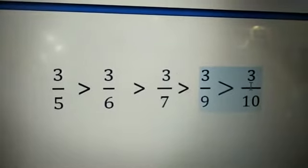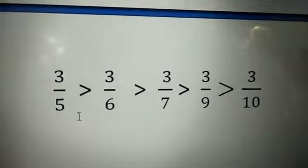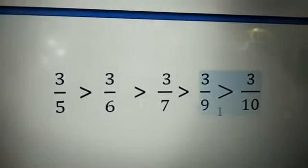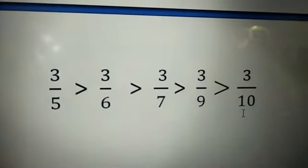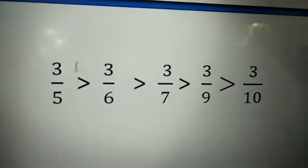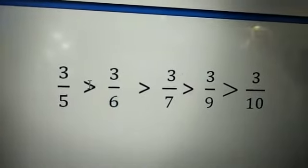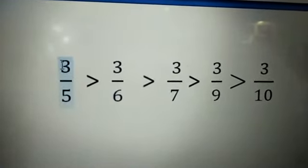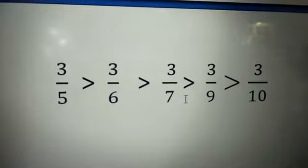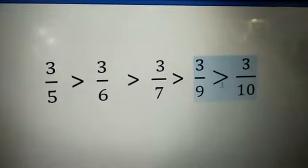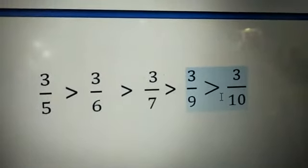In descending order for this type of problem, you have to arrange small to big in the denominator — like 5, 6, 7, 9, 10 — but the symbol here is different: strictly greater than. You should change the symbol. So our answer is: 3/5 > 3/6 > 3/7 > 3/9 > 3/10. We have arranged the given fractions in descending order.